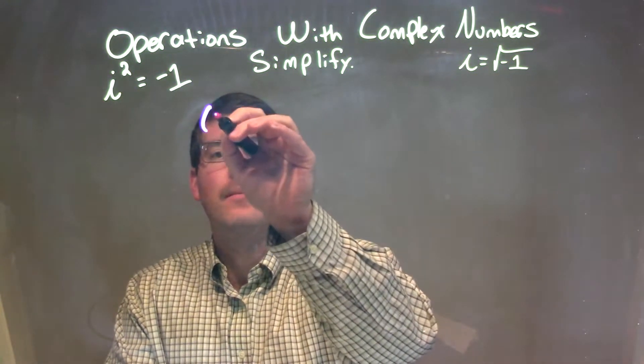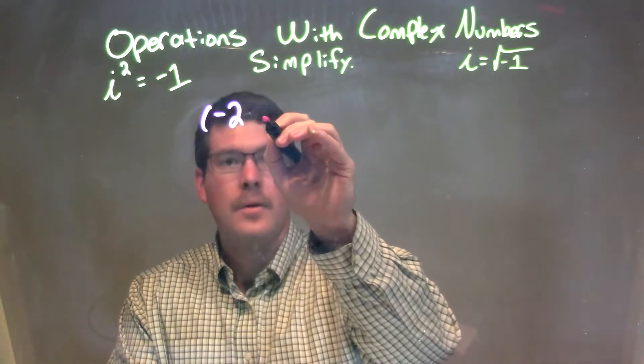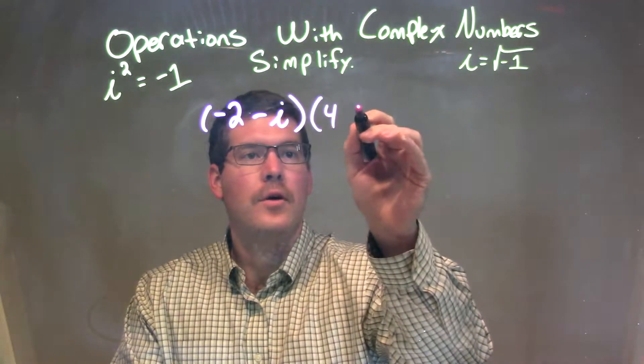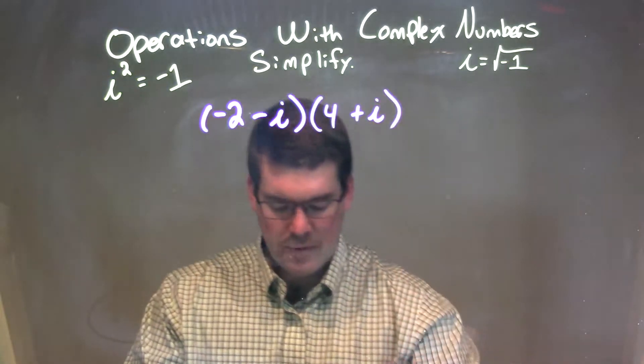I was given this: minus 2 minus i times 4 plus i. Okay? Well...